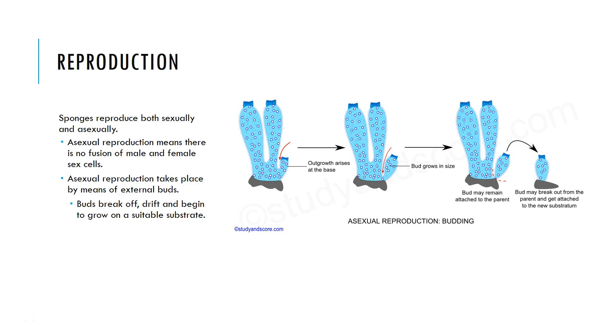Asexual reproduction is a method of cloning — it means that there's no fusion of the male and female sex cells. In sponges, they are able to do this through something called budding, or asexual budding.